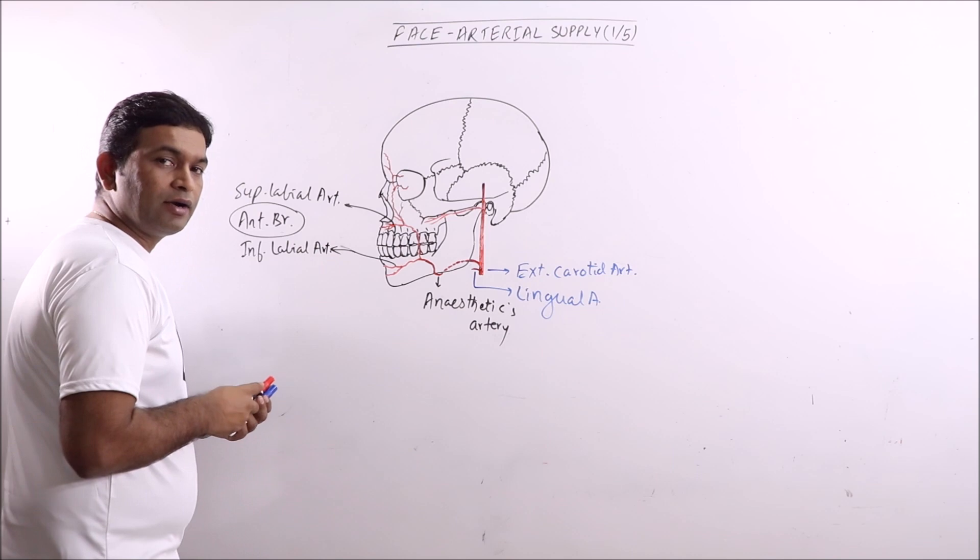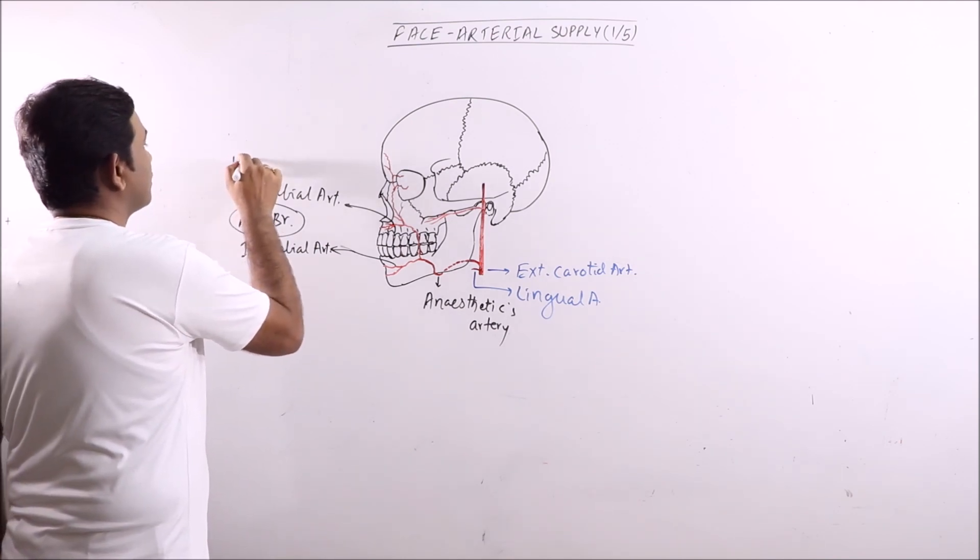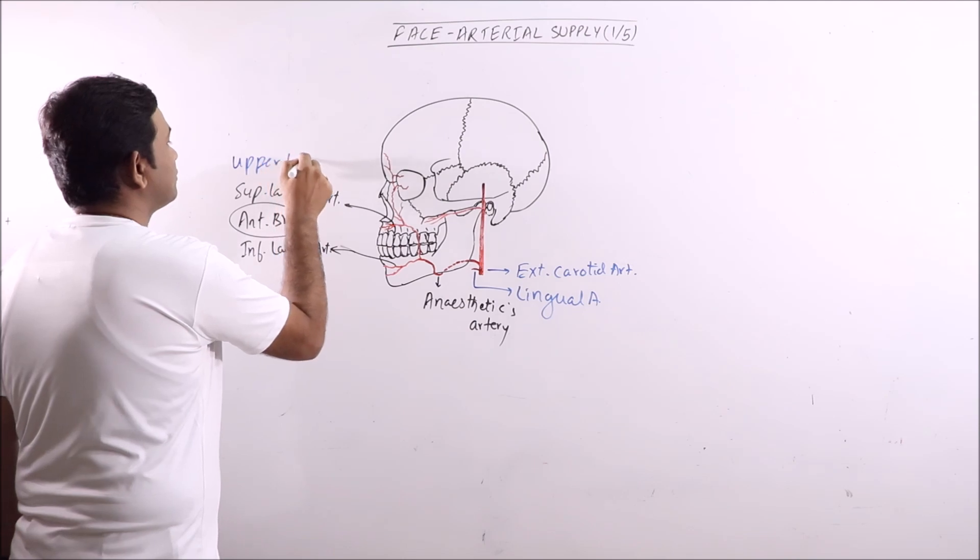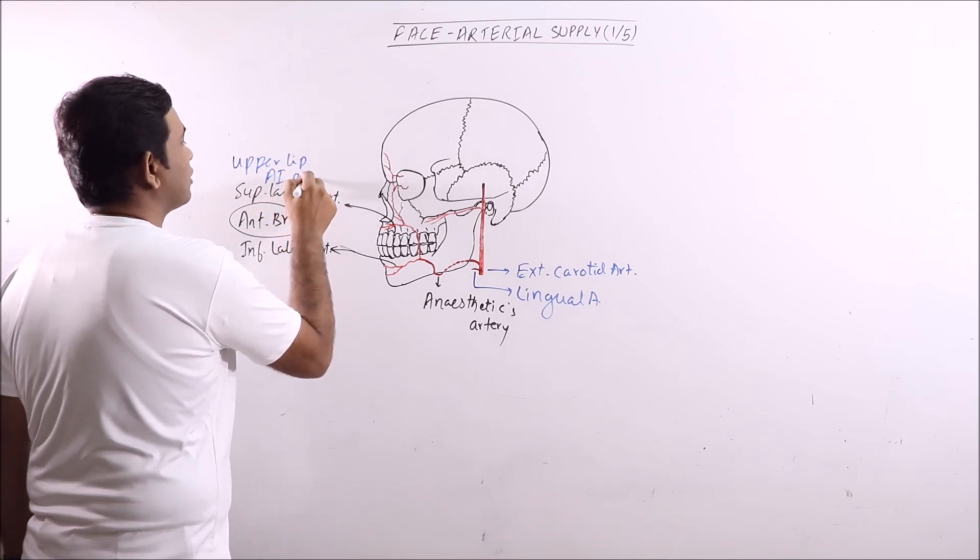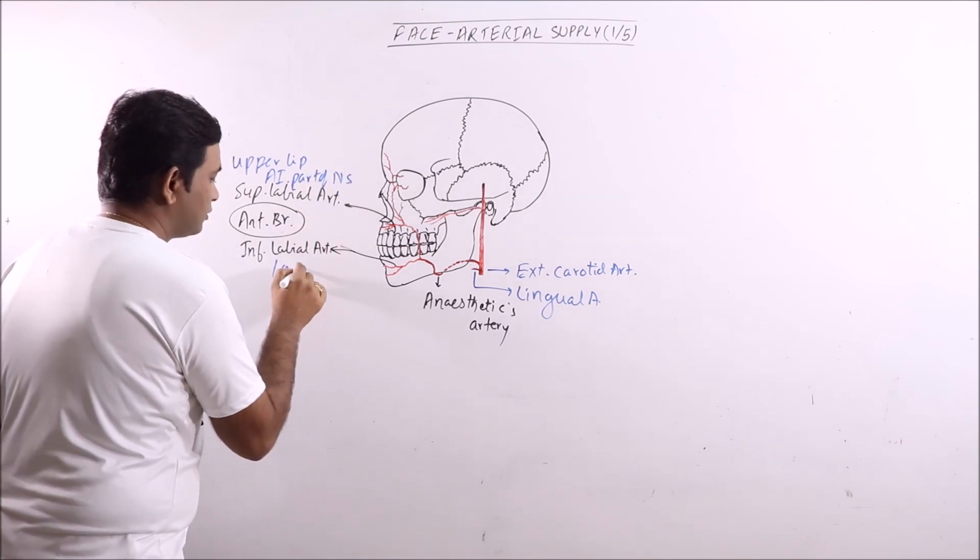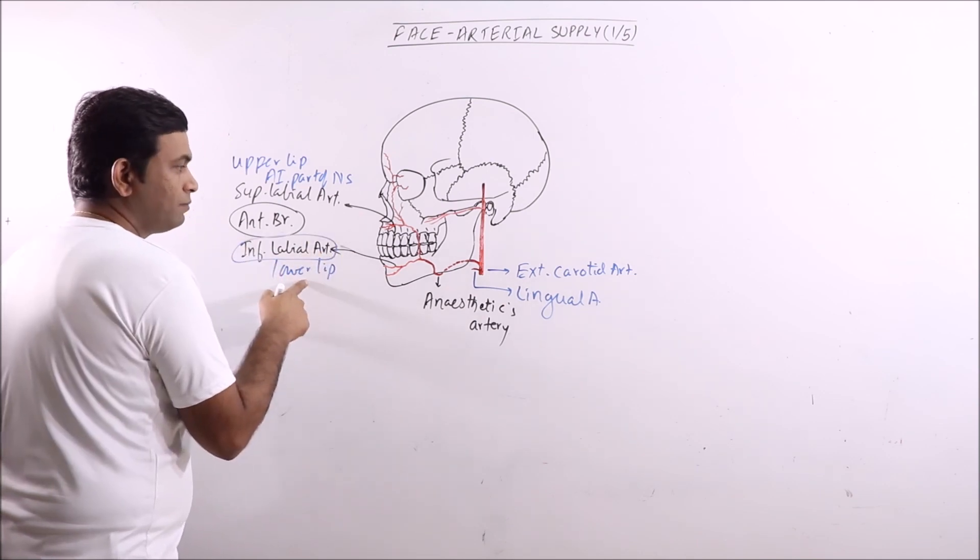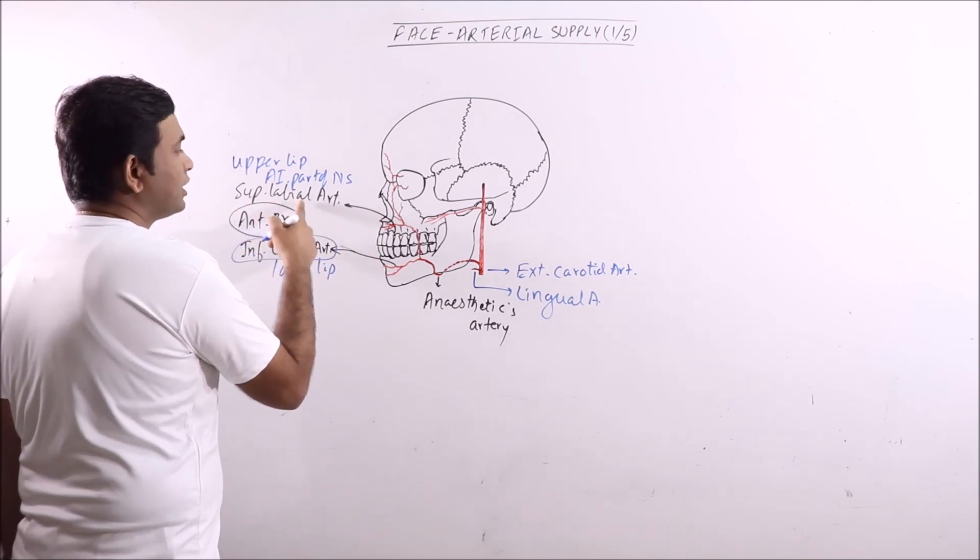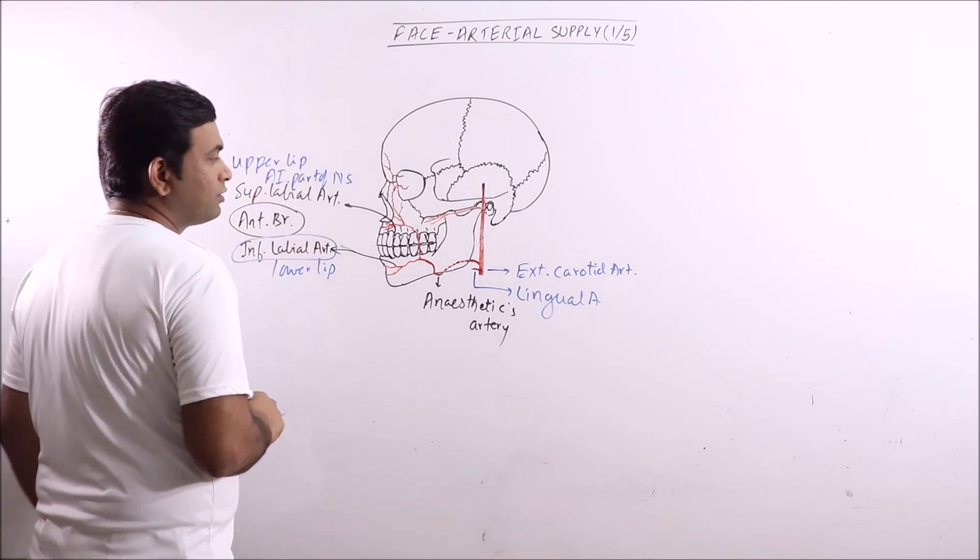Superior labial artery supplies the upper lip and anterior inferior part of nasal septum. So inferior labial artery supplies the lower lip, and the superior labial artery supplies the upper lip and anterior inferior part of nasal septum.